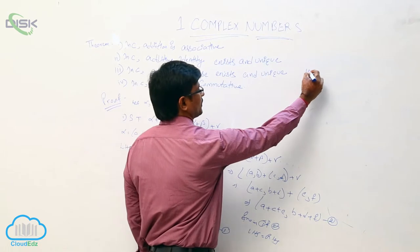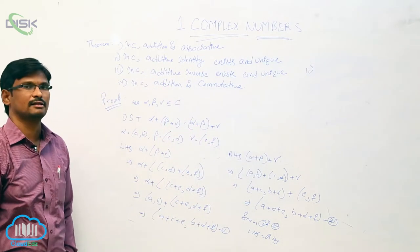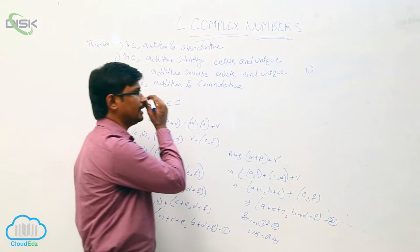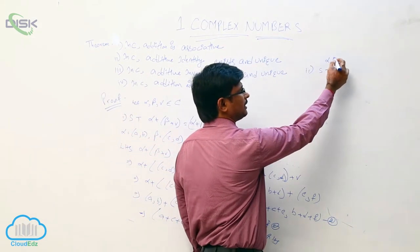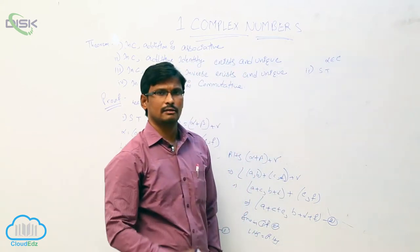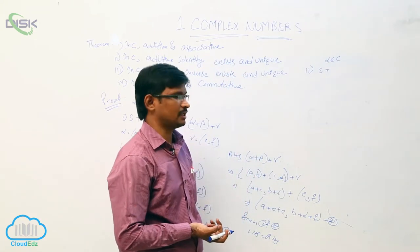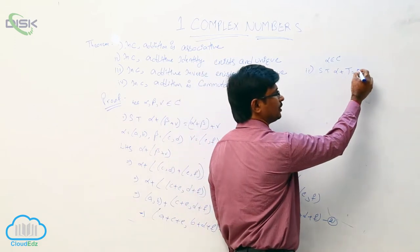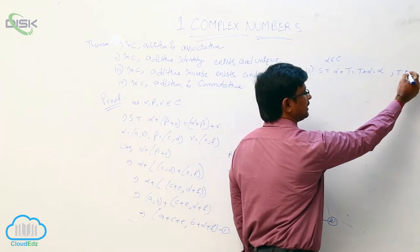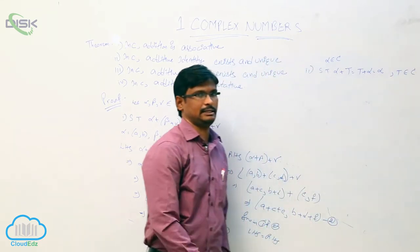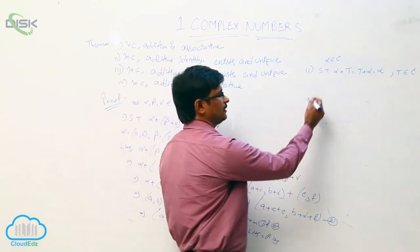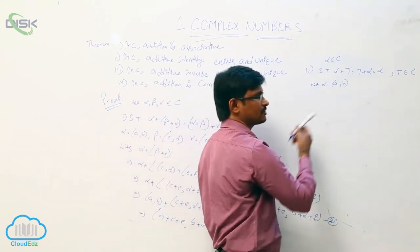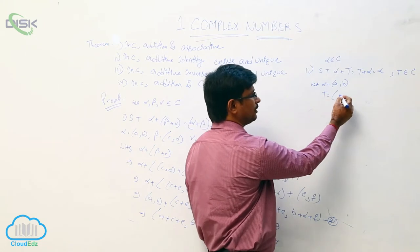Second property: additive identity exists and is unique. That is, we have to show that for a complex number alpha belonging to C, alpha plus t equals t plus alpha equals alpha, where t belongs to complex number C. That is additive identity. So let alpha equal to (a, b). Let t equal to (0, 0).